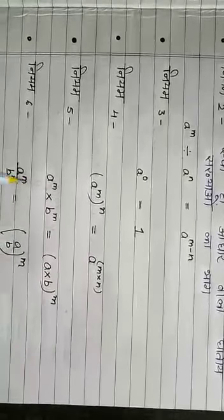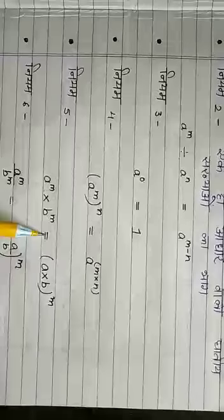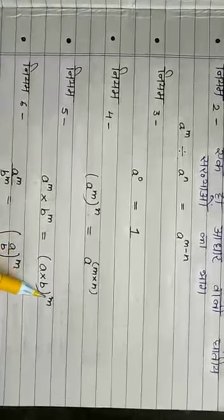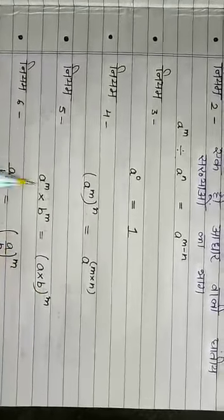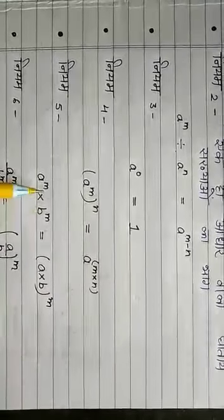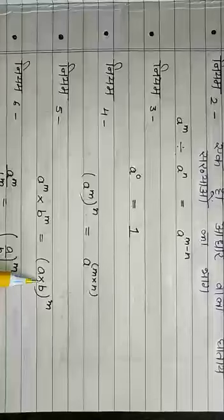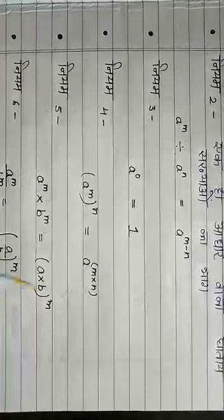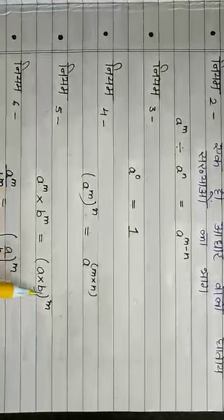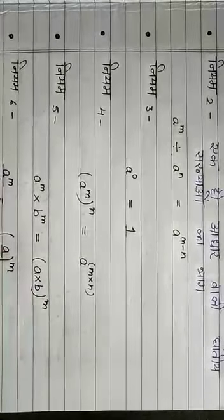नियम 5: A की power M गुणे B की power M is equals to (A into B) की power M। इसका मतलब यह है कि अगर आधार अलग-अलग हैं और घातें समान हैं, तब इनको हम A into B की whole power M एक साथ लिख सकते हैं। (Rule 5: A^M × B^M = (A×B)^M — same exponents, different bases can be combined.)